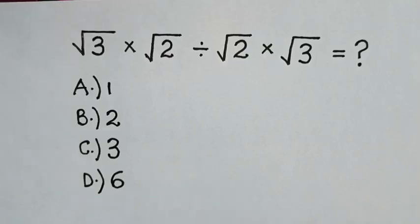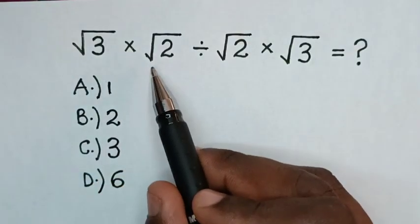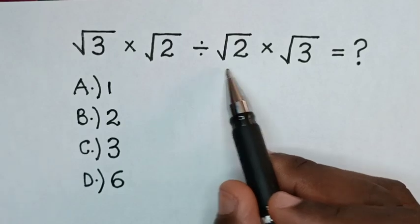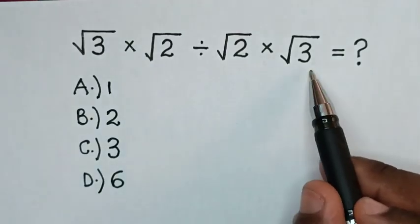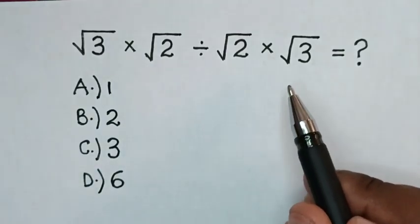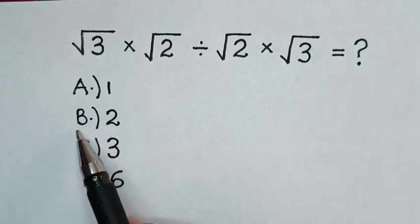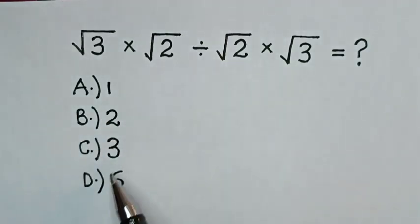Hello! How to solve square root of 3 times square root of 2, divide by square root of 2 times square root of 3? Select between the answers: A, 1; B, 2; C, 3; D, 6.